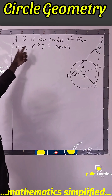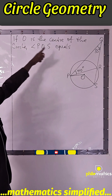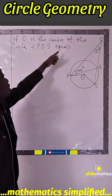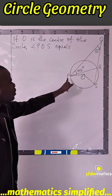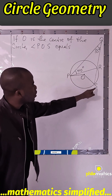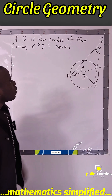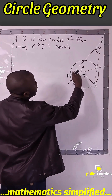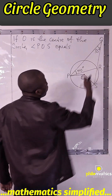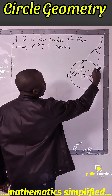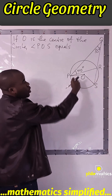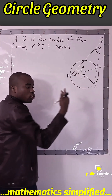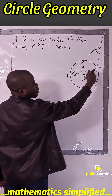This question says, if O is the center of the circle, angle POS equals — what is this angle POS? Now, we know this angle and we know this angle. If you can get this angle, we can easily get angle POS because the angle at the center is twice the angle at the circumference.